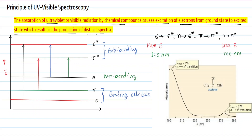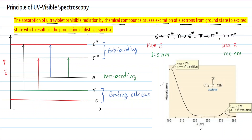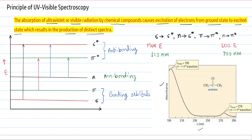The spectra obtained is a plot of absorbance versus wavelength. When ultraviolet or visible radiation is passed over a chemical compound, electrons are excited from ground state to excited state. To understand this excitation, we need to know the energy levels of bonding orbitals, non-bonding orbitals, and anti-bonding orbitals. The energy levels shown here are: sigma bonding orbital, pi bonding orbital, n non-bonding orbital, pi-star anti-bonding, and sigma-star anti-bonding orbital.